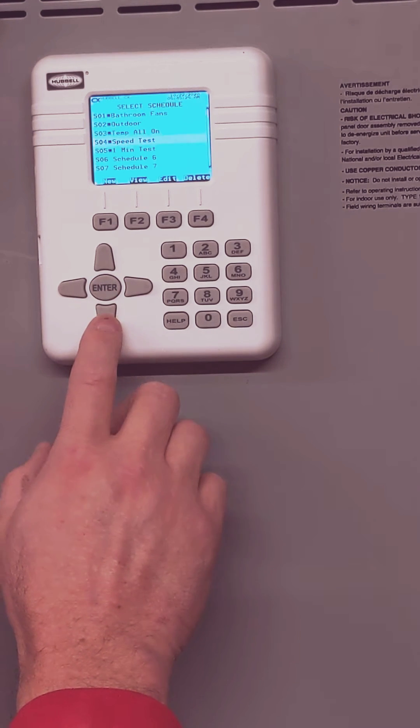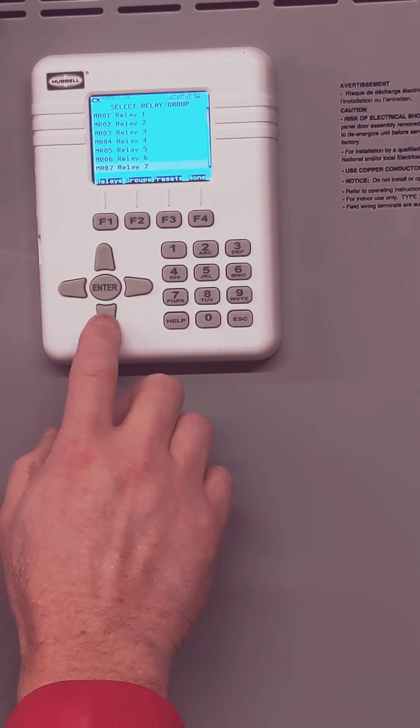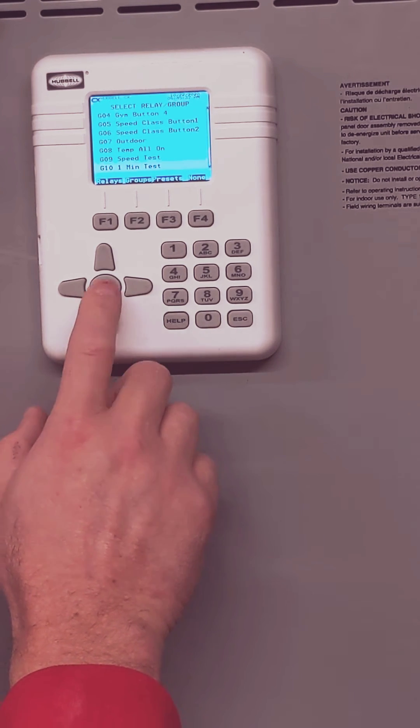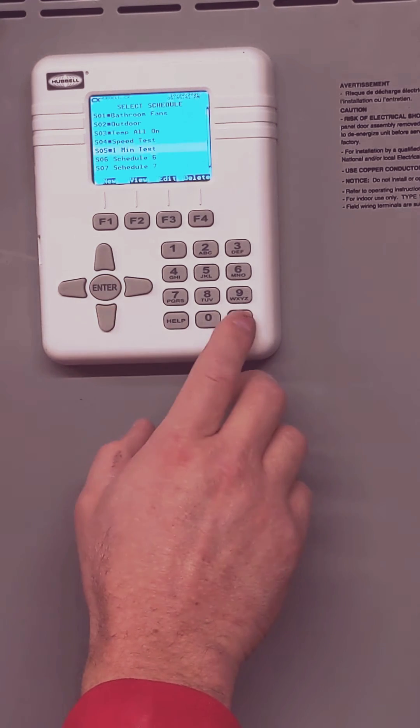And then go to schedules, and then we're going to create the one minute test, and then we're going to change the controls to one minute test. We're controlling, save, escape.